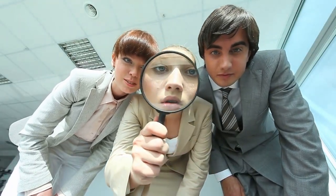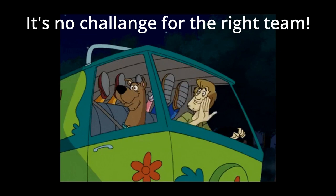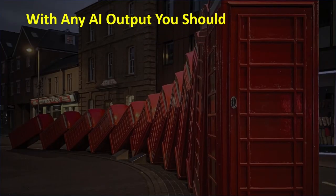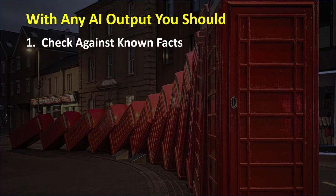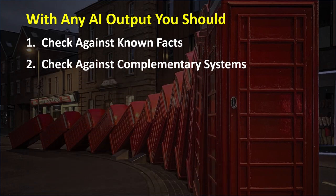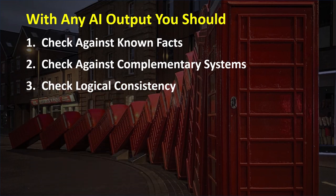Identifying a hallucination as a general user can be quite challenging, especially given the increasing complexity and capabilities of AI systems. Here are some general strategies to detect hallucinations. With any AI output you should: 1. Check against known facts — cross-verify AI-generated content with established facts; if the AI claims something contrary to what is commonly accepted, that's a red flag. 2. Check against a complementary system — employ different AI models or analytical tools that perform similar tasks and compare the results; significant deviations can indicate a potential hallucination. 3. Check for logical consistency — is the AI output logically consistent and coherent? Hallucinations may manifest as contradictions or nonsensical statements.